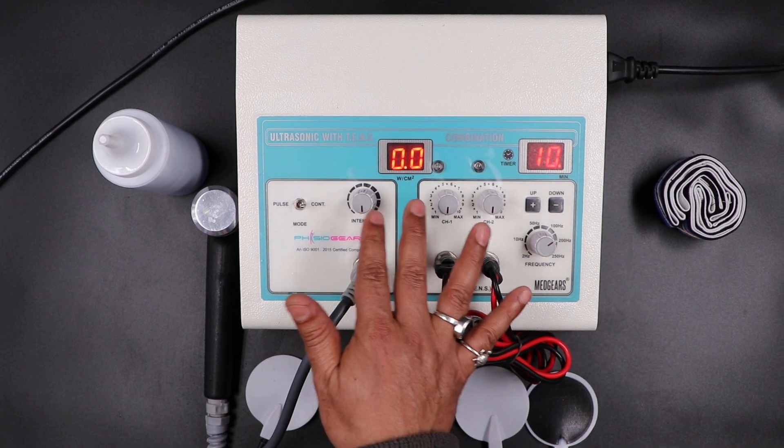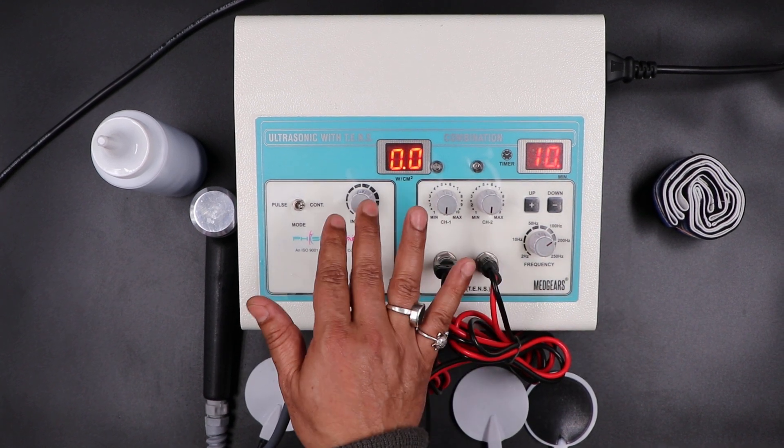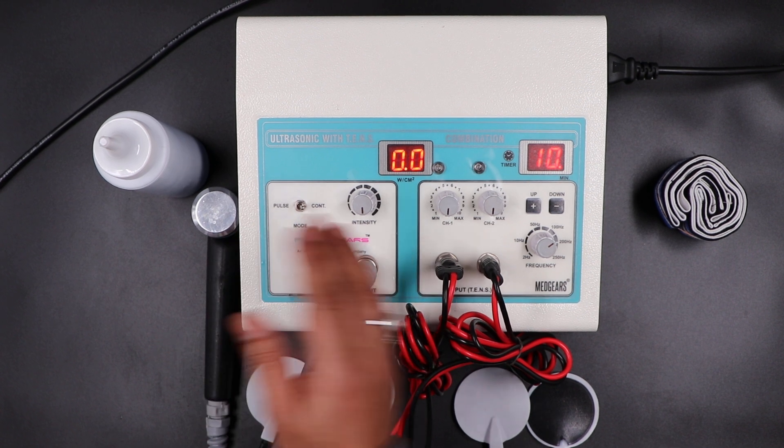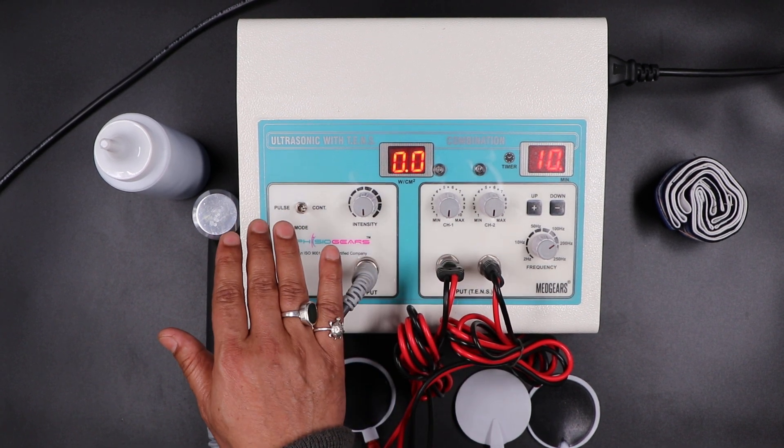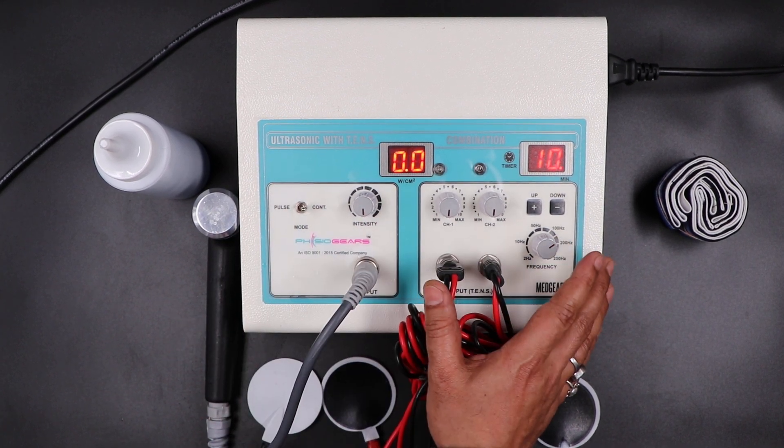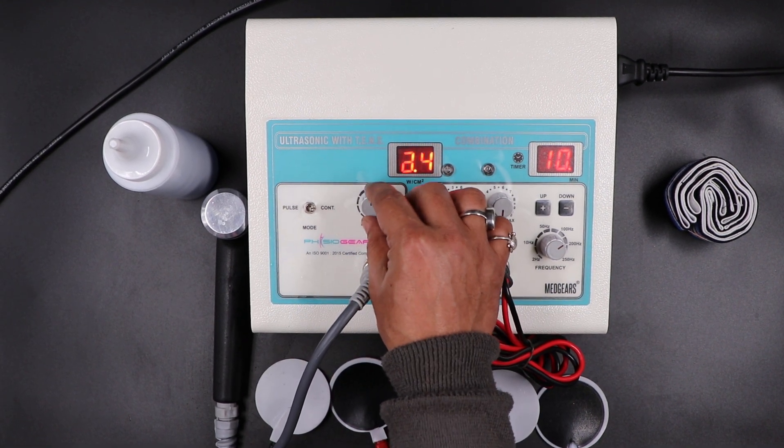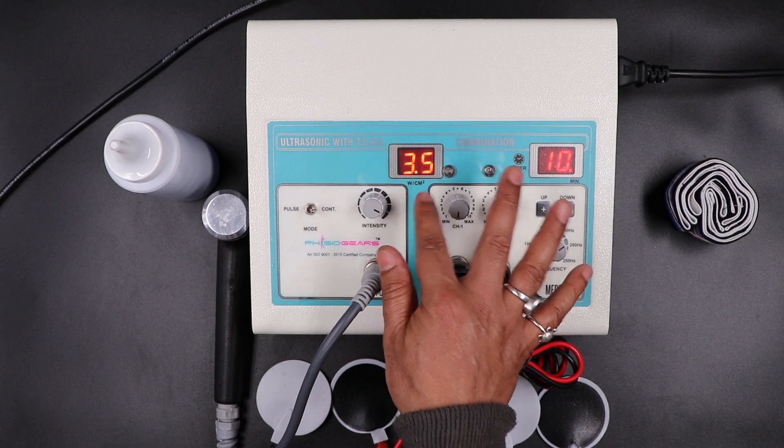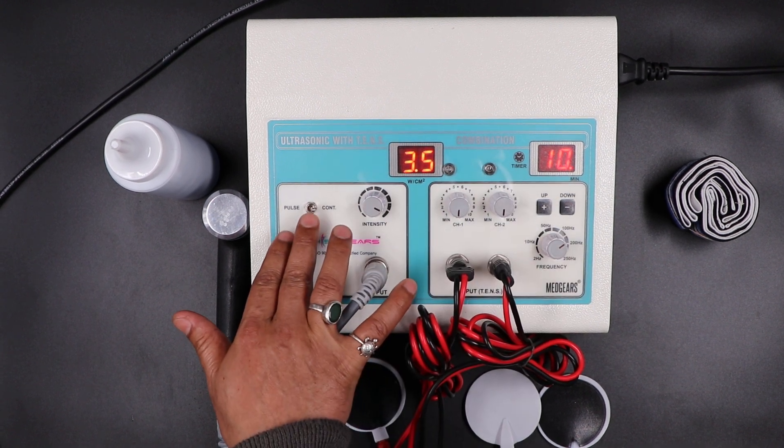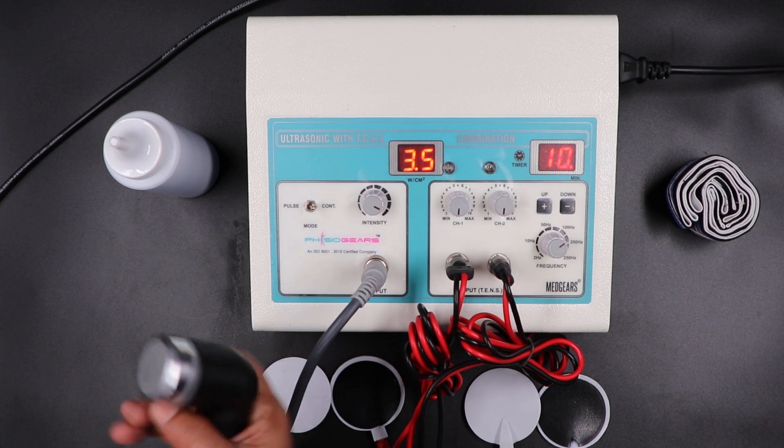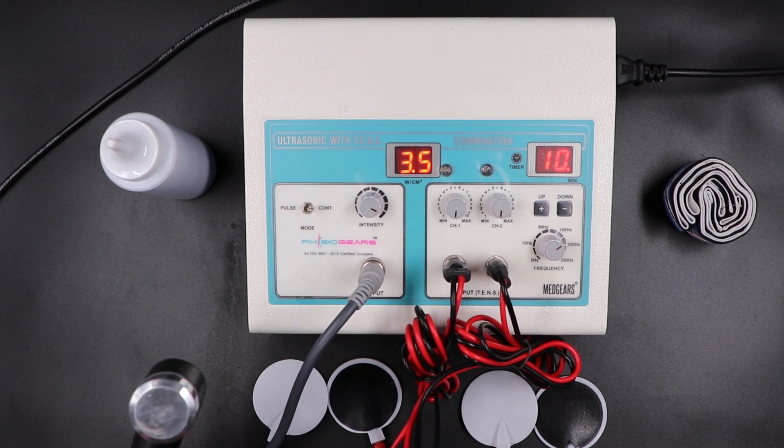You can see the intensity is zero zero. The left portion is for ultrasonic and the right portion is for TENS therapy. You can see the intensity is zero zero. Rotate the intensity at last, this is 3.5, and mode is continuous. We are checking the probe.